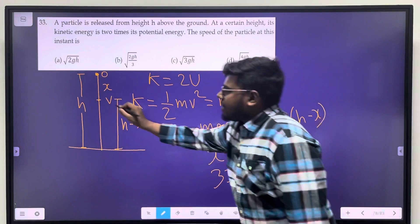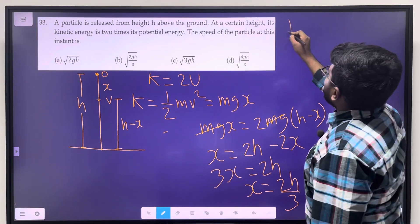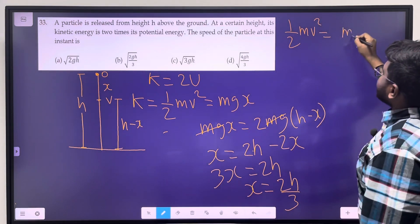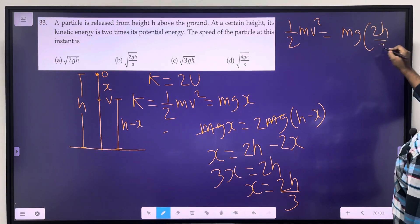At this instant, to find velocity, we use the relation 1/2 mv² equals mg into x. Substituting x equals 2h divided by 3.